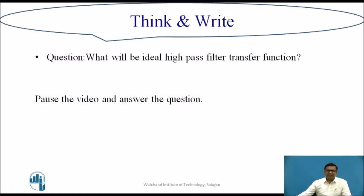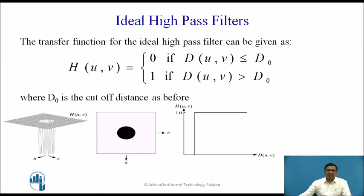Now let us consider a question: what will be the ideal high pass filter transfer function? The answer is that the transfer function of the ideal high pass filter is the reverse of the low pass filter. Instead of a white circle at center, it is a black circle with white outside — the opposite. H(u,v) = 0 if D(u,v) is less than or equal to d0, and H(u,v) = 1 if D(u,v) is greater than d0.